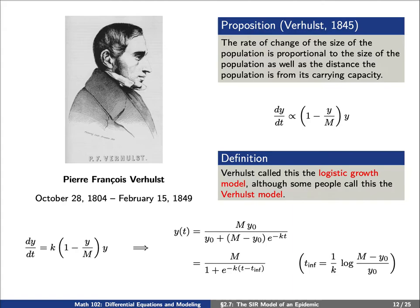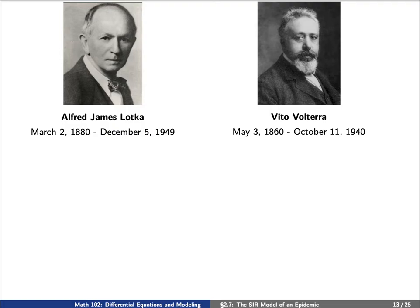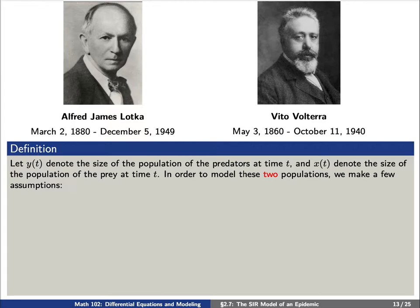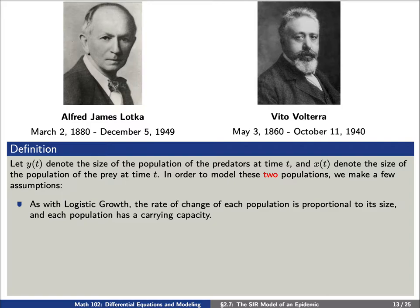Independently, the American physicist Alfred Lotka and the Italian physicist Vito Volterra were interested in population sizes, and they arrived independently at a certain equation. Let's let y(t) denote the size of a population of predators at time t, and x(t) denote the size of a population of prey at time t. In order to model these two populations, we'll make a few assumptions. First, as with logistic growth, the rate of change of each population is proportional to its size, and each population has a carrying capacity.